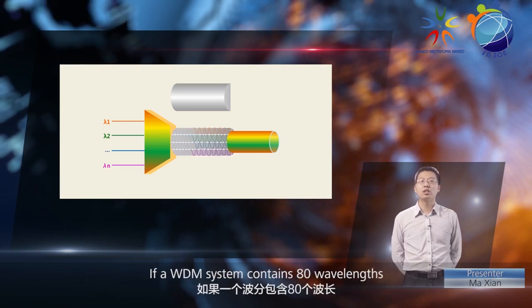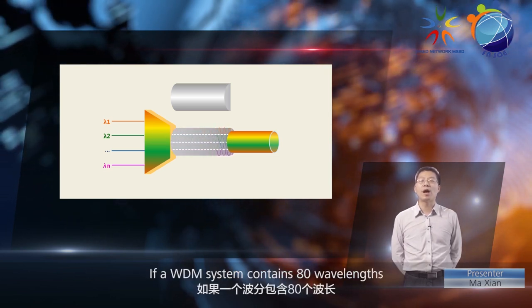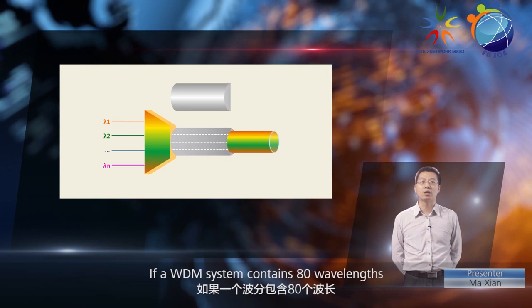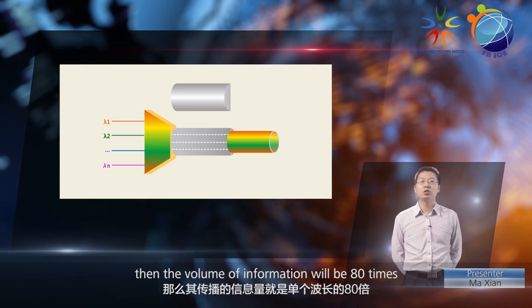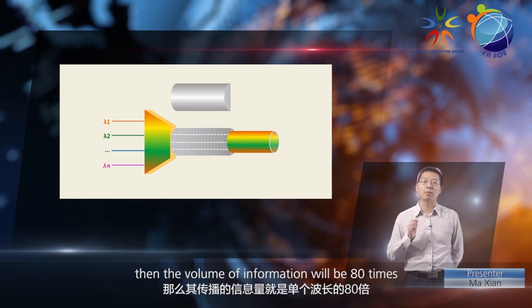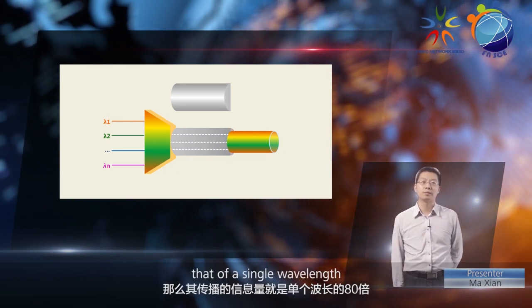If a WDM system contains 80 wavelengths, then the volume of information will be 80 times that of a single wavelength.